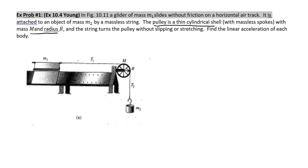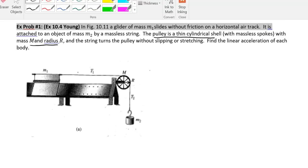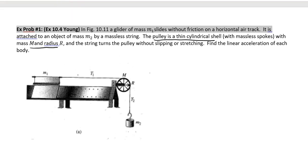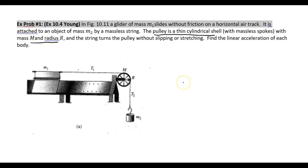So first thing we do, whenever we have a problem we want to solve for acceleration, we're dealing with forces acting on things. Draw a good free body diagram. So we have M2. There is force of gravity acting on it, which is just going to be M2G. We have tension, which they call T2 pulling upwards.